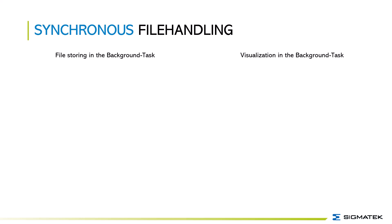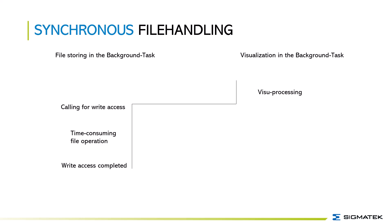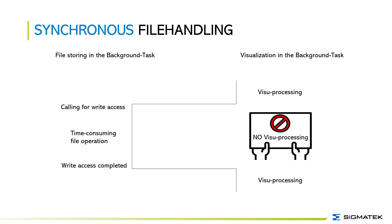On one side we have the file storing in the background task and on the other side we have the visualization in the background task. So we have visualization processing and then we switch over to file storing. It starts with calling for a write access, then the time-consuming file operations are done, and it ends when the write access is completed. After this we switch back to visualization. While we are doing the time-consuming file operations there is no visualization processing, which means that the visualization freezes and is not responding to user inputs.